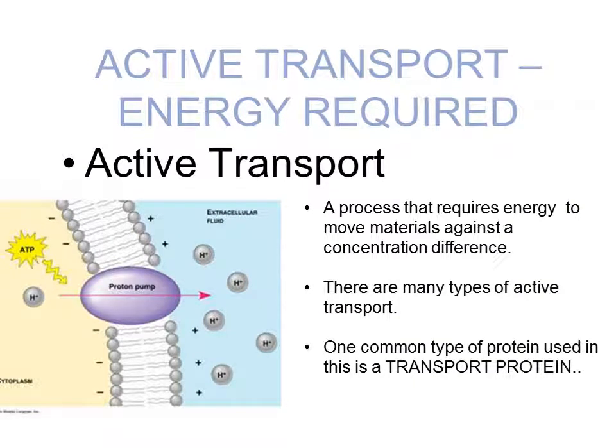The next type of transport is active transport. Here's the key difference: active transport requires energy. Make sure to get into your notes that active transport does require energy. Here we have a picture of active transport happening — hydrogen, that's H+, is being moved from an area of low concentration to an area of high concentration, against the gradient. As you might guess, that requires energy because you need to move against the concentration gradient — this is the opposite of how diffusion naturally goes. The yellow star-shaped symbol represents ATP, your energy packets. ATP is used to activate that proton pump so that hydrogen can be moved against the concentration gradient.